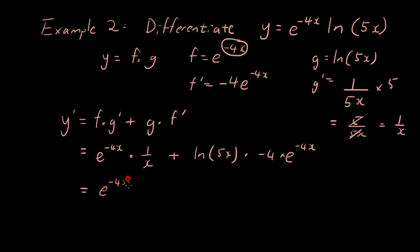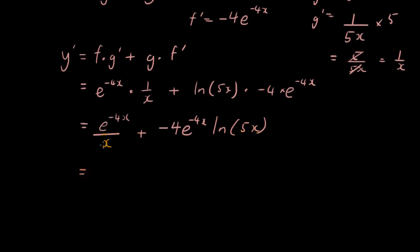So it's e to the power of negative 4 x over x plus negative 4 e to the power of negative 4 x times ln 5x. And for simplicity, let's just take out the common factors. So let's take out e to the power of negative 4 x, bracket 1 over x plus negative 4 ln 5 x. So we take out all the common factors.